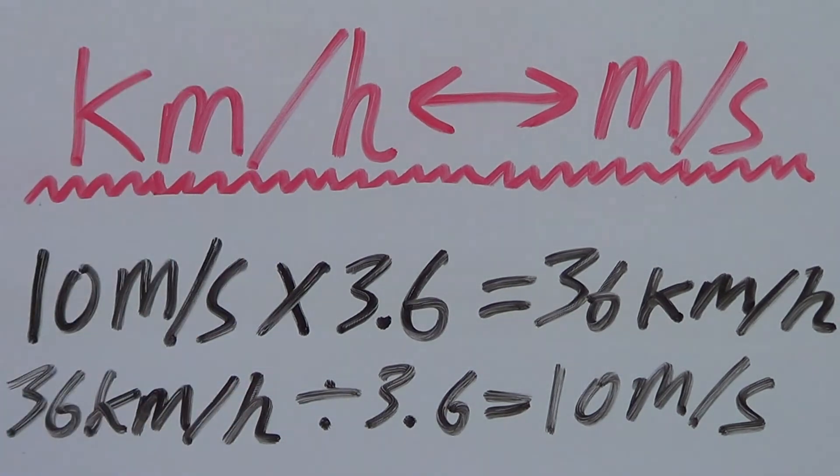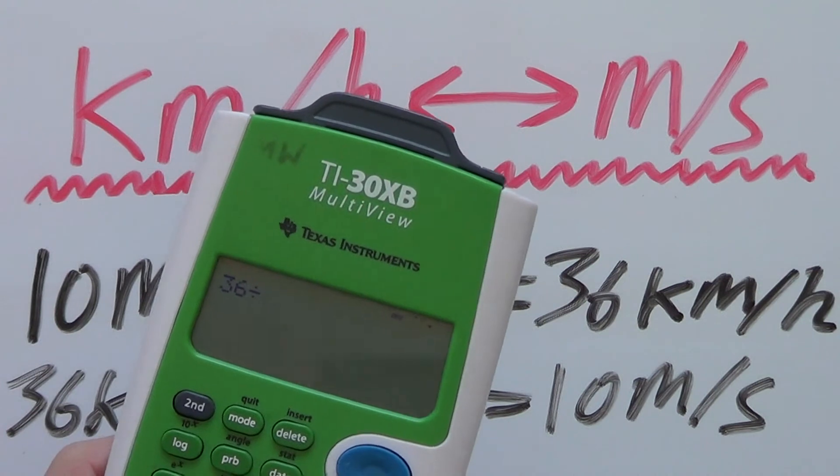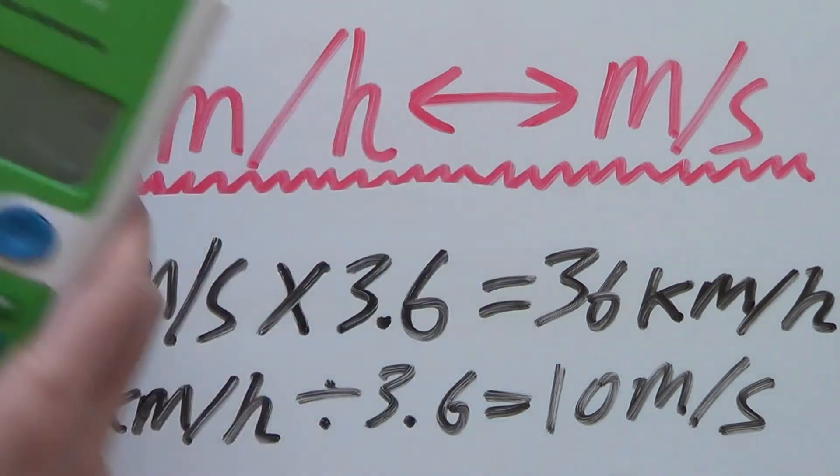And just to show that calculation is correct, 36 divided by 3.6 is 10.